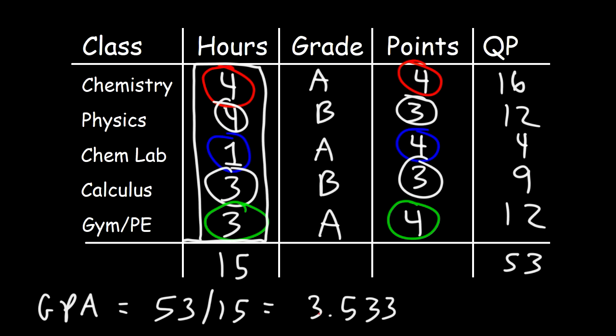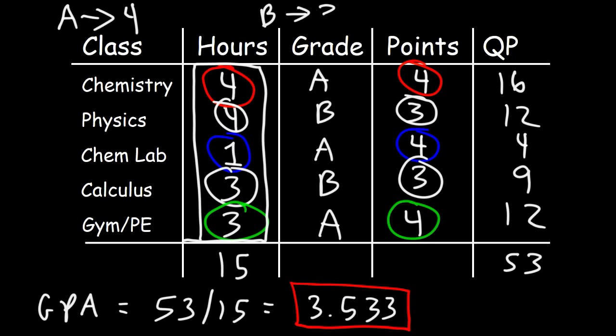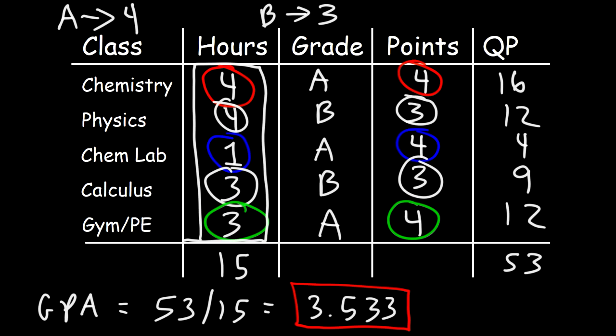So does this answer make sense? If a person receives straight A's, the GPA should be 4. If a person receives straight B's, the GPA should be 3. As we can see, this student received a mixture of A's and B's, so we expect their GPA to be between 3 and 4 — which it is. That confirms our answer is correct.